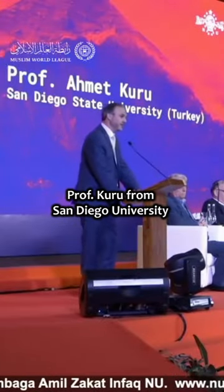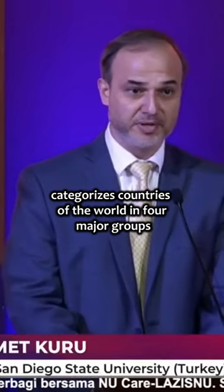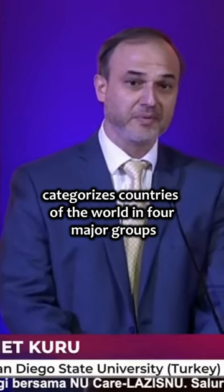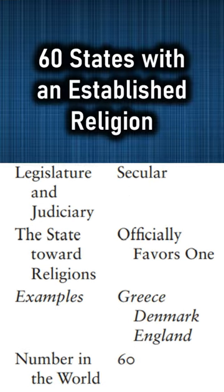Professor Kuru from San Diego University categorizes countries of the world into four major groups. The first one: religious states, in which the legislation is based on religion and it officially favors one particular religion — for example, Iran, Saudi Arabia, or Vatican. There are 12 such countries in total.